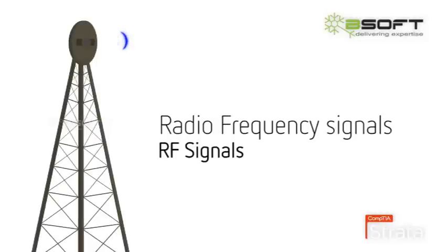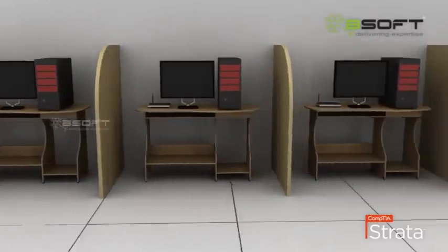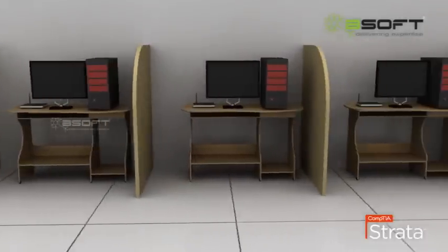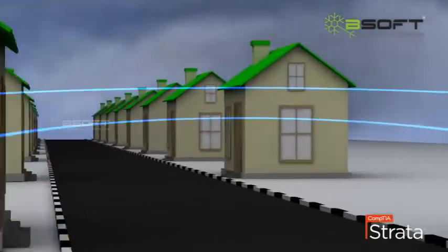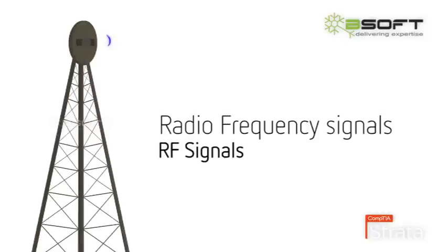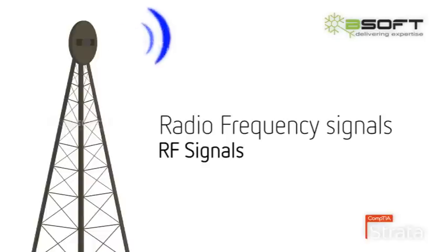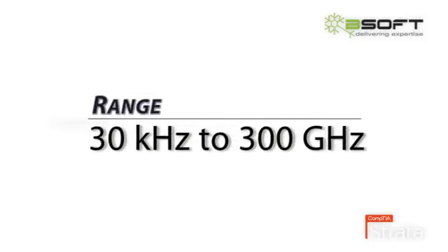If cables are not used, how do we communicate in a wireless environment? What is the medium of transmission in a wireless network? The answer is radio frequency signals, also called RF signals. RF signals are the medium of transmission in a wireless environment. The frequency range of radio frequency signals varies from 30 kilohertz to 300 gigahertz.